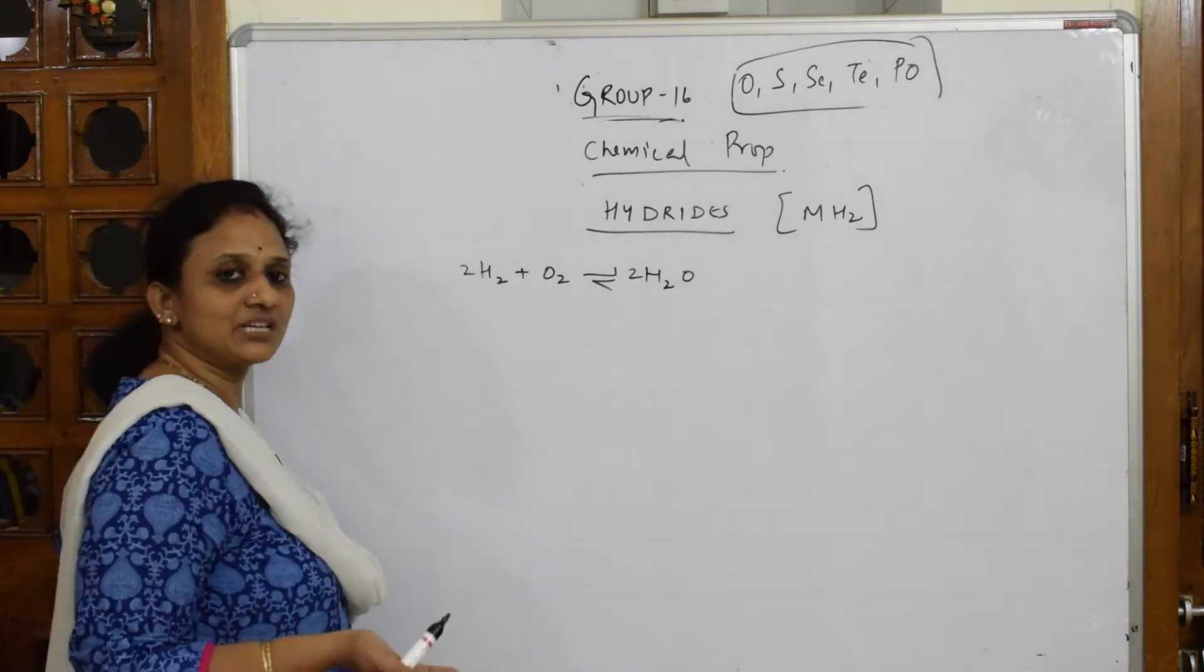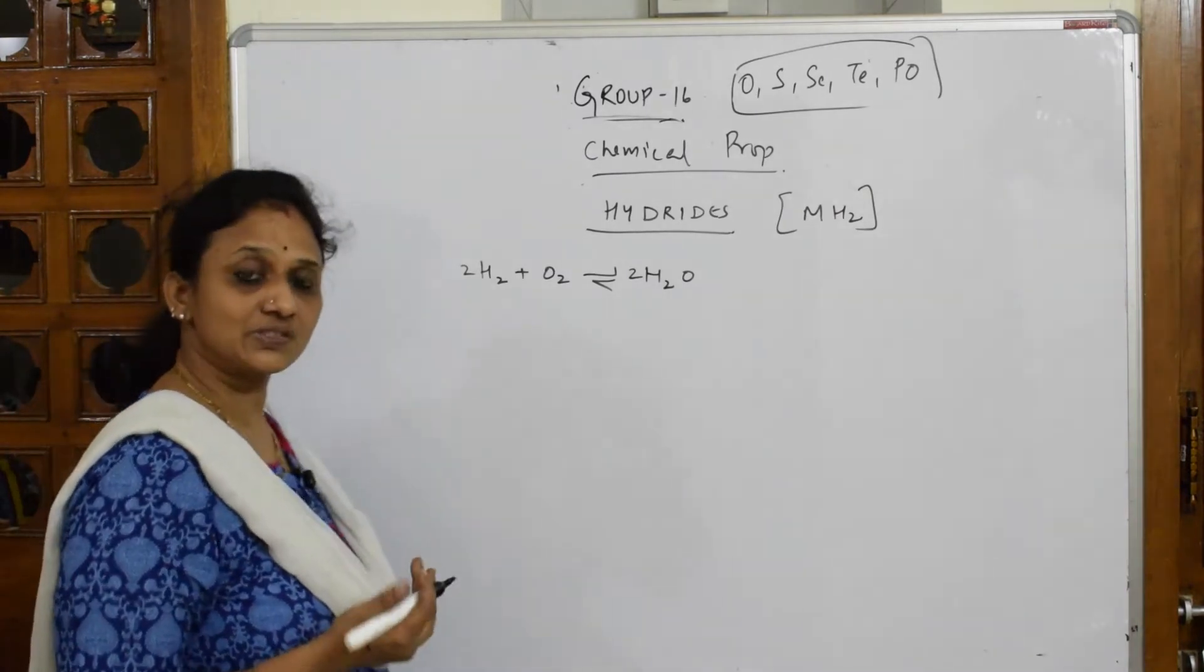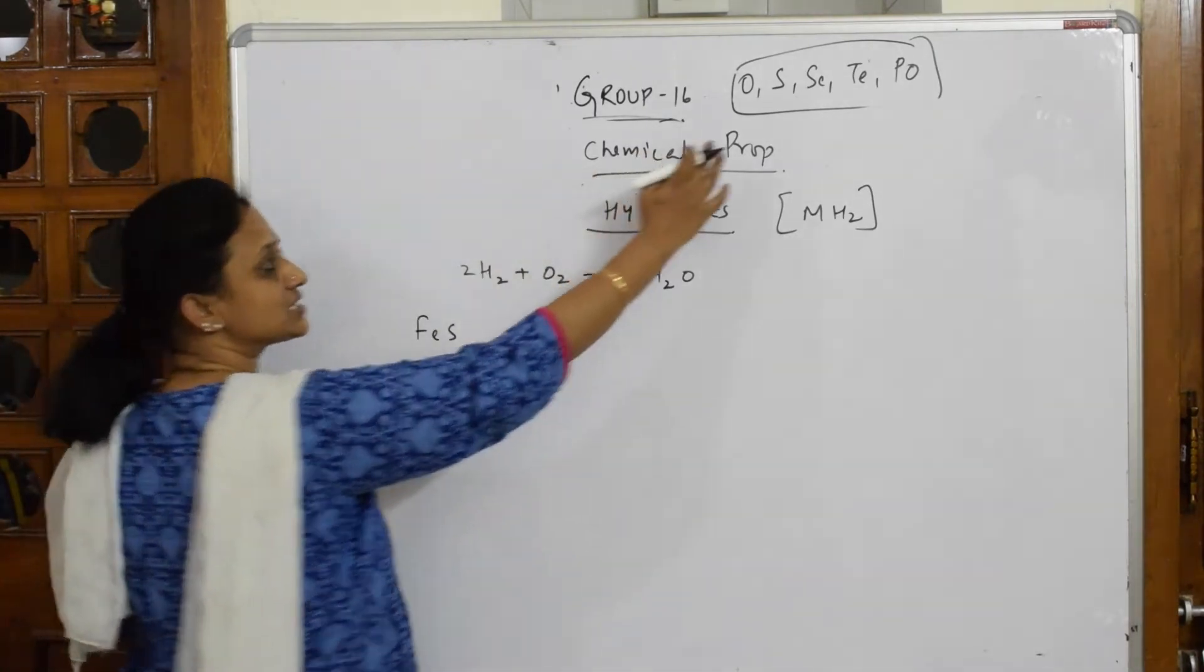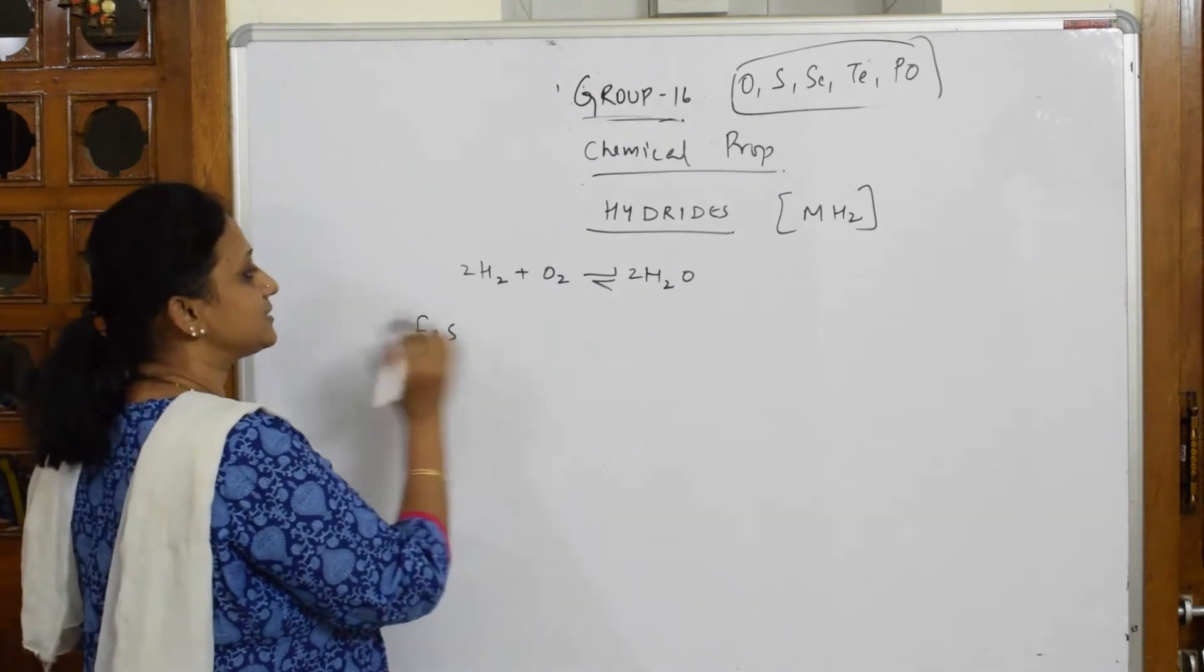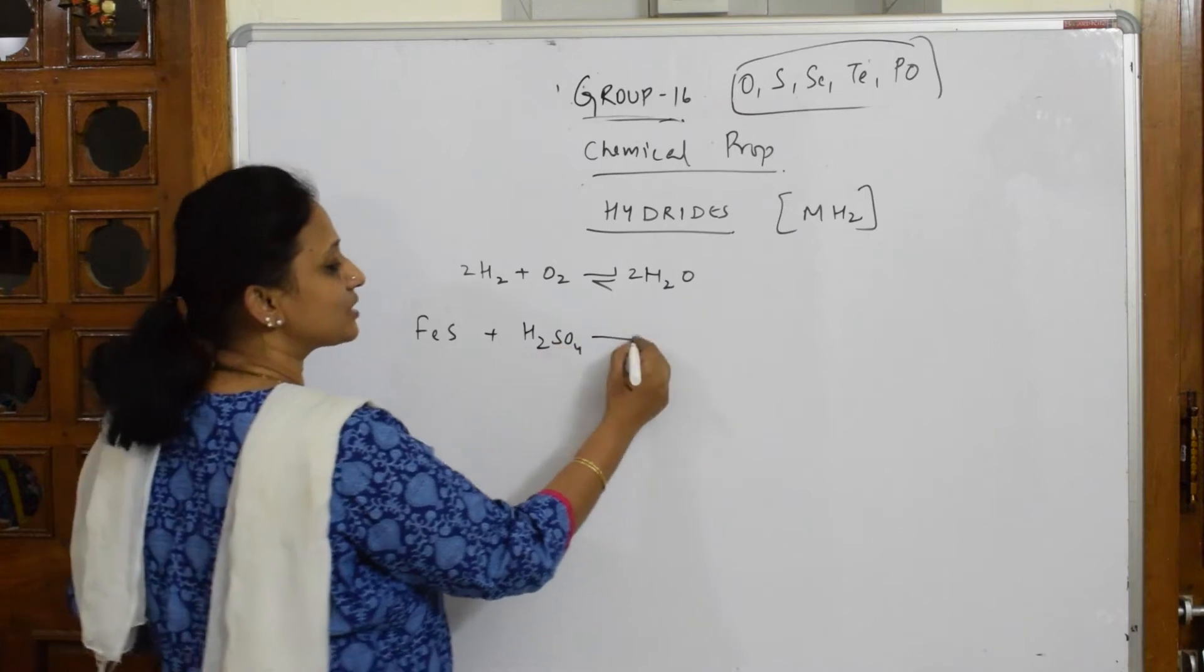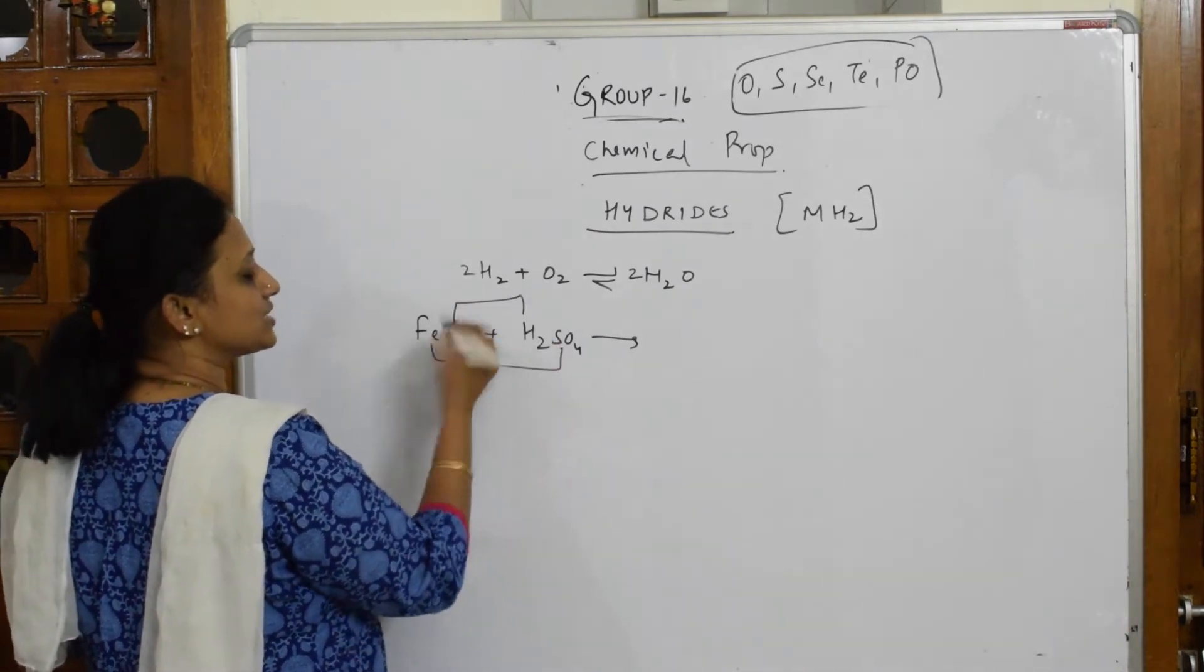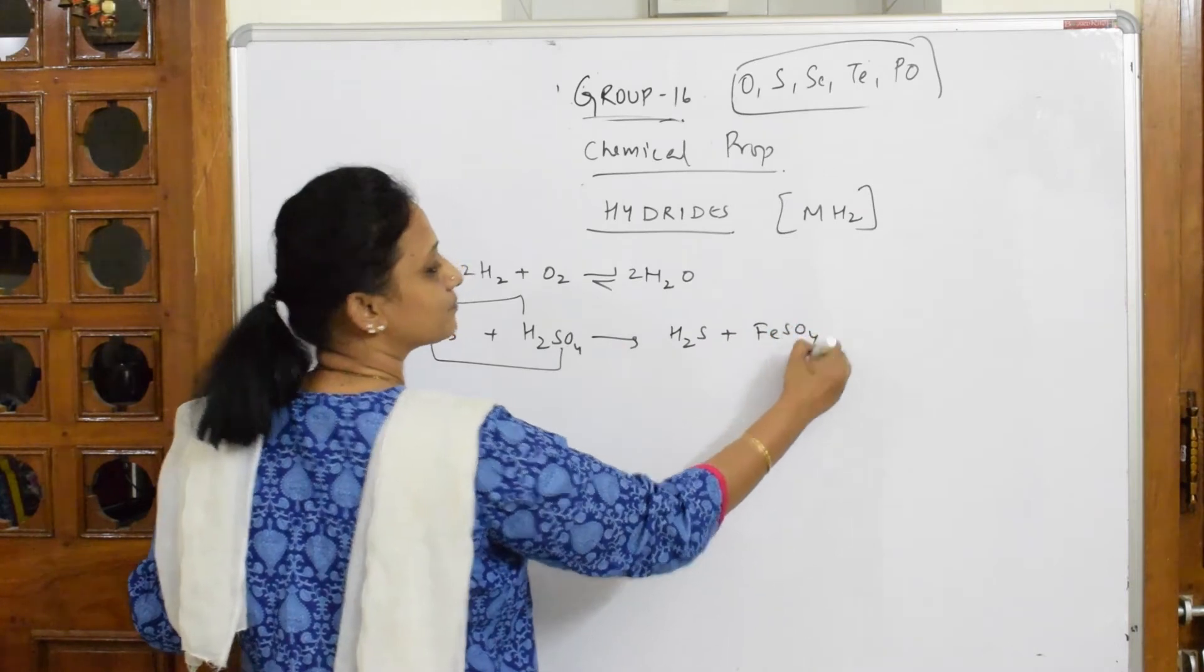Suppose if I take some other example, sulfide. I said they are called chalcogens because they exist in the form of sulfide zone oxide. Suppose if I take FeS, sulfur is the next element of oxygen. I am taking a combination of this, the iron sulfide. Suppose if I add this with sulfuric acid, just I am trying to give you the formation of this metal hydride form. FeSO4 plus H2S.